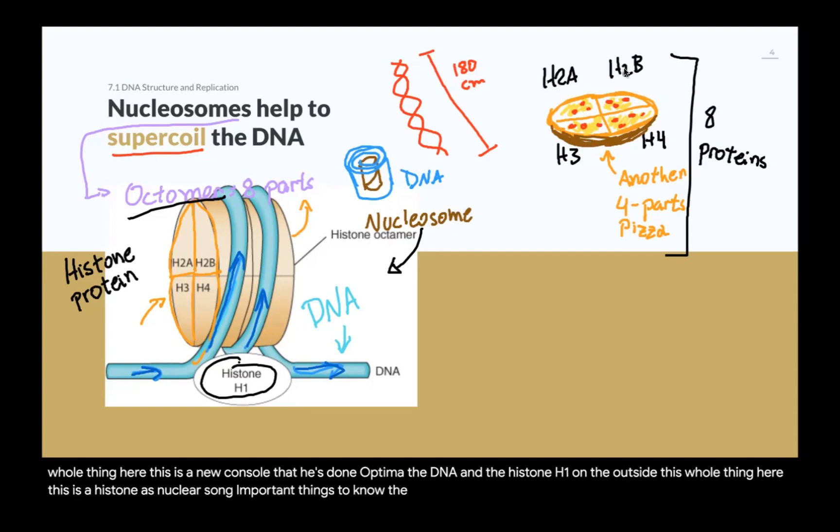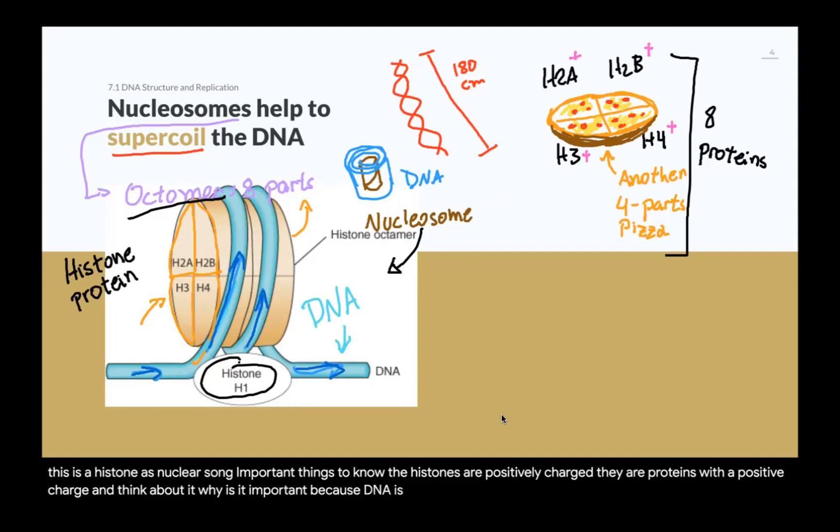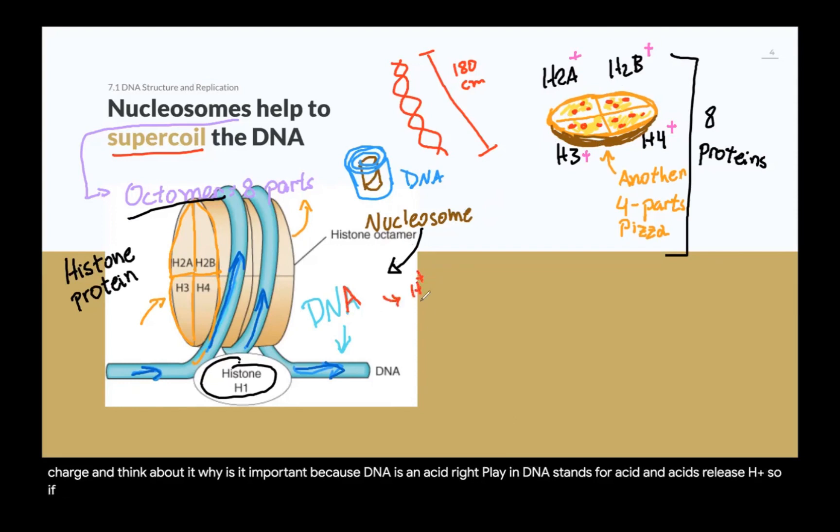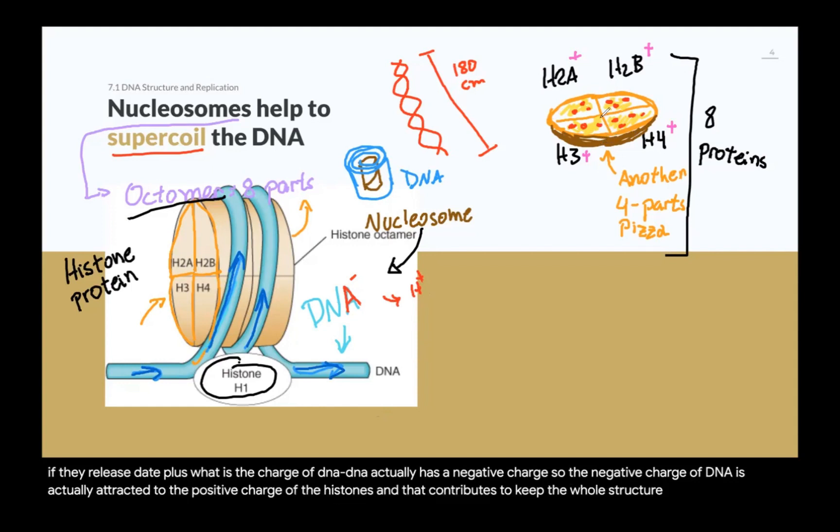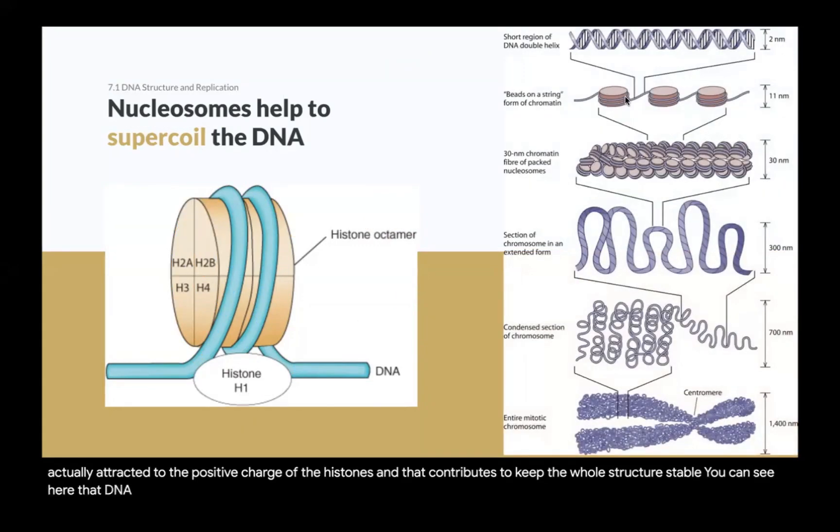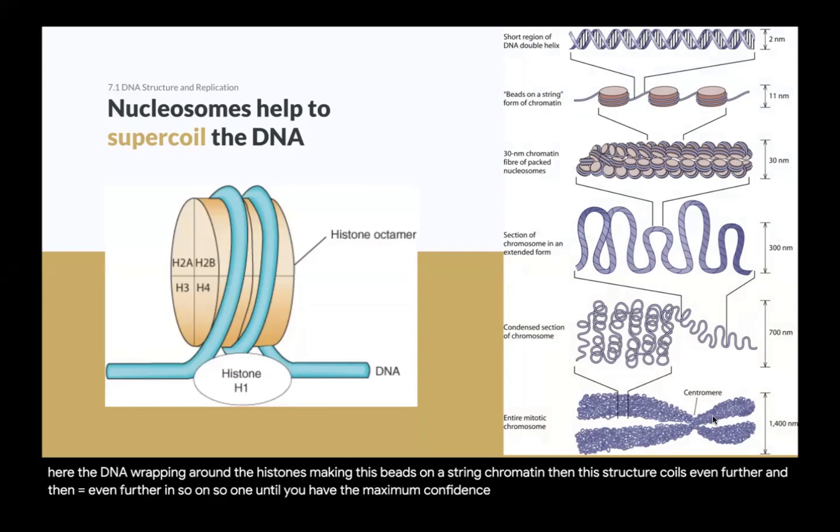The histone octomer, the DNA, and the histone H1 on the outside, this whole thing here is a nucleosome. Important things to know, the histones are positively charged. They are proteins with a positive charge. And think about it, why is it important? Because DNA is an acid. The A in DNA stands for acid, and acids release H+. So if they release H+, what is the charge of the DNA? DNA actually has a negative charge. So the negative charge of the DNA is actually attracted to the positive charge of the histones, and that contributes to keep the whole structure stable. And you can see here the DNA wrapping around the histones, making these beads-on-a-string chromatin. Then this structure coils even further, and then it coils even further, until you have the maximum condensation of a chromosome during cell division.